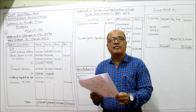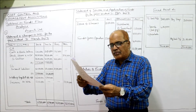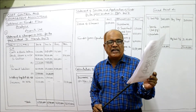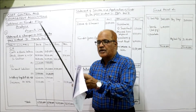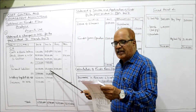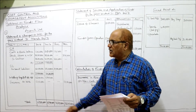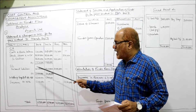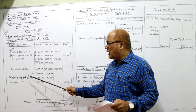Before making the statement of source and application, first we make the statement of changes in working capital. The current assets are cash and bank balance — last year 1,25,000, current year 2,50,000. Similarly, the three current assets are cash and bank balance, stock/stores and work in progress, and sundry debtors. The outside current liability is only one. So A is current assets, B is current liability, and A minus B is the working capital. Last year working capital is 55 lakh.